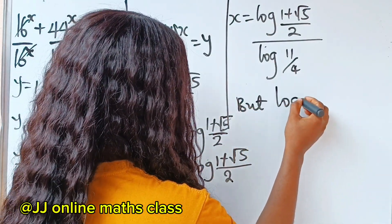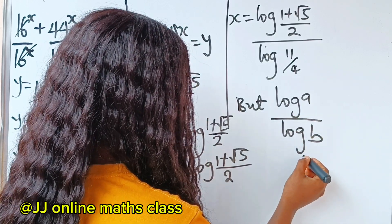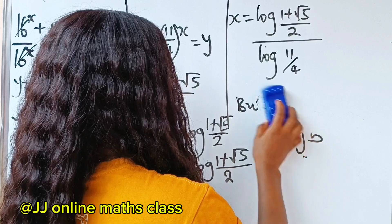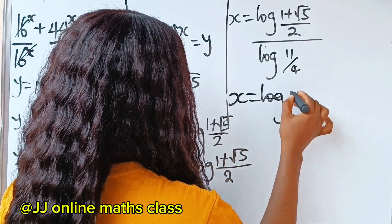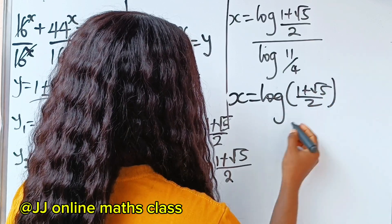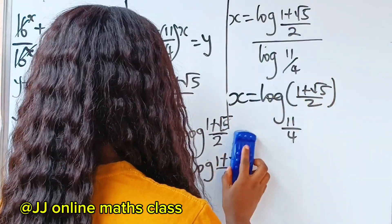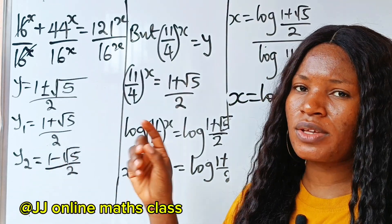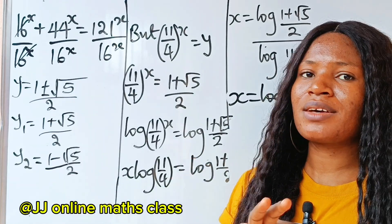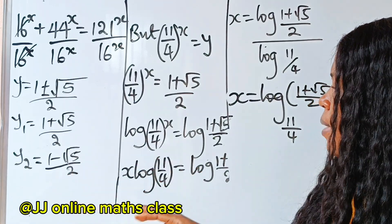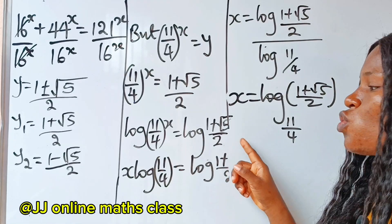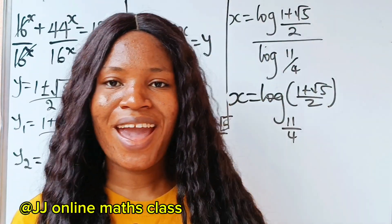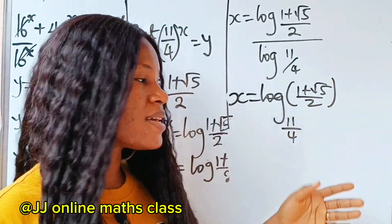Dividing both sides by log(11 over 4), we get x equals log of (1 plus root 5) divided by 2, all divided by log(11 over 4). Since log a divided by log b, with the same base, can be written as log base b of a, we express this as x equals log base (11 over 4) of (1 plus root 5) divided by 2. For the second value, y equals 1 minus root 5 over 2, which gives a negative number — and log of a negative number is invalid — so we discard that solution. Therefore the only solution is x equals log base (11 over 4) of (1 plus root 5) divided by 2. Thank you so much for watching.